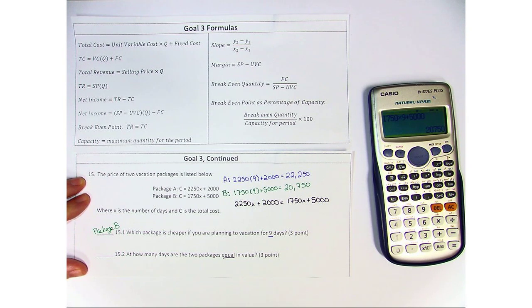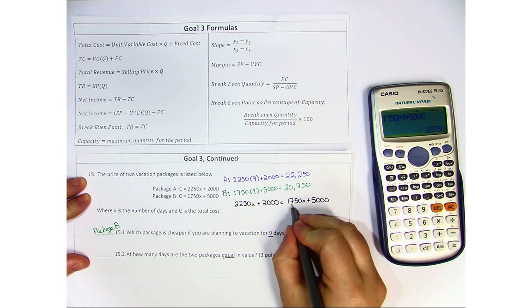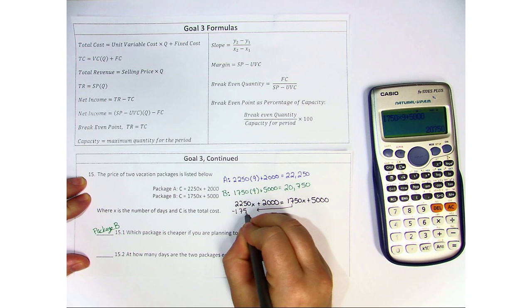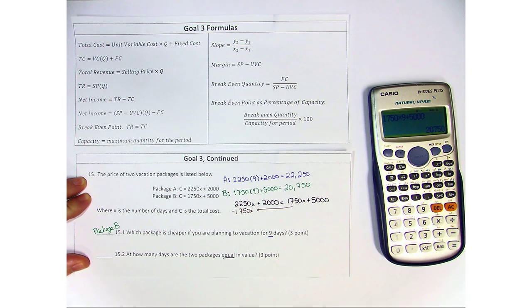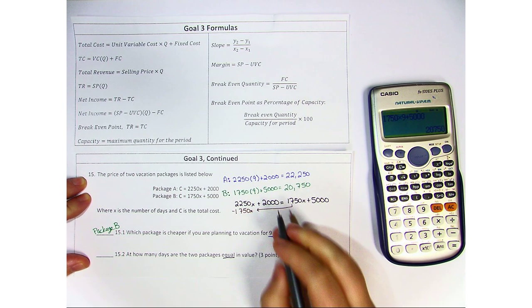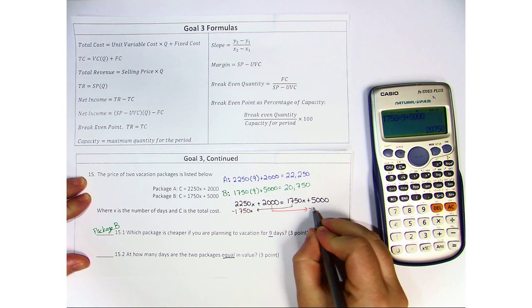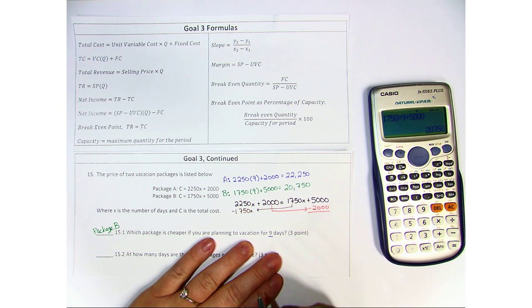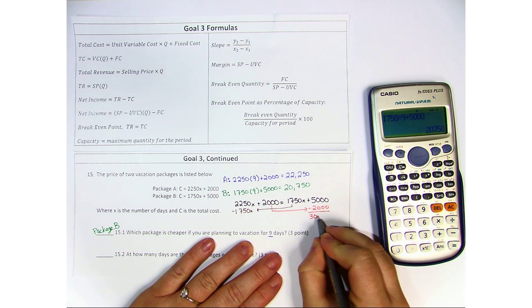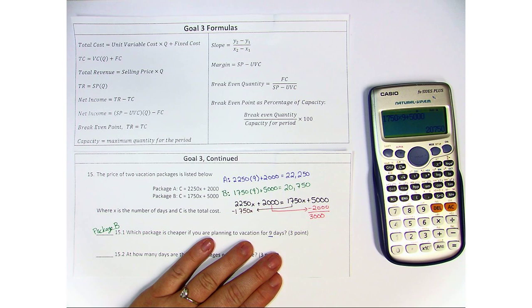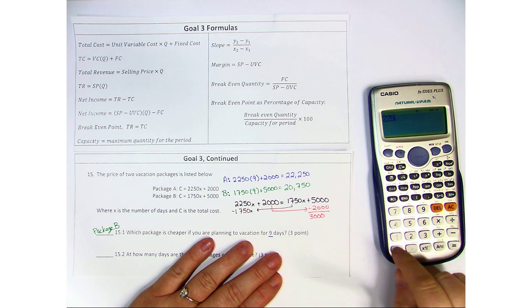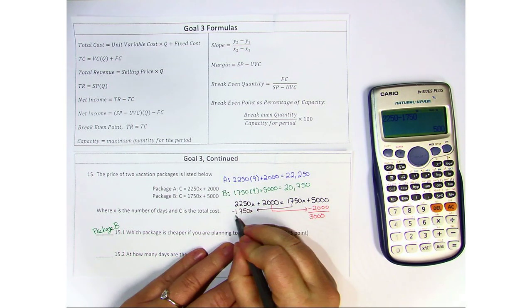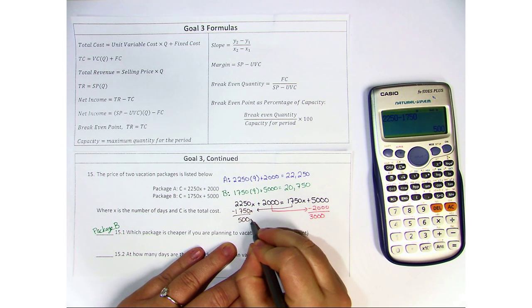We're going to go ahead and start by moving over some numbers. I'm going to take 1750 over, so minus 1750x, and I'm going to take 2000 over, so minus 2000. So 5000 minus 2000 is 3000, and 2250 minus 1750 is 500x.